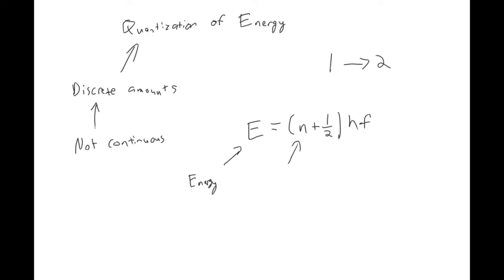This is the energy. N is kind of like the M that we saw with the single and double slit interference. Only now it's only positive. So N goes from zero up to infinity. Any integer that's positive, and zero.